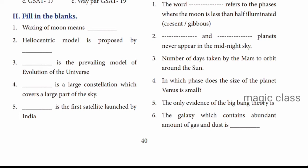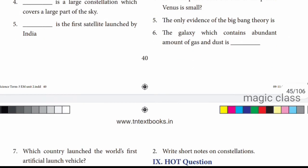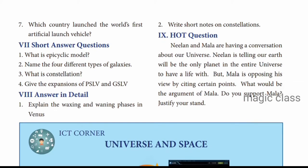Question 4: In which phase does the size of the planet Venus appear small? The answer is the gibbous phase. Question 5: The only evidence of the Big Bang theory is a faint glow in space called the cosmic microwave background. Question 6: The galaxy which contains abundant amounts of gas and dust is the spiral galaxy. Question 7: Which country launched the world's first artificial satellite? Russia launched the world's first artificial satellite - it was Russia's Sputnik that was used.